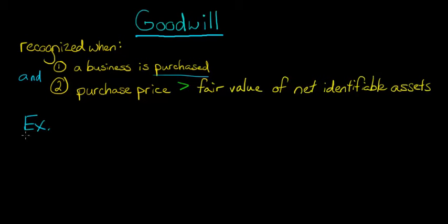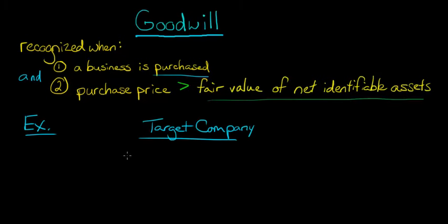So in our example, let's say the Target, the company that we're trying to acquire. We're a company trying to acquire this new company called Target Company. So we're going to have to look at Target Company's assets and liabilities in order to figure out what its net identifiable assets are.